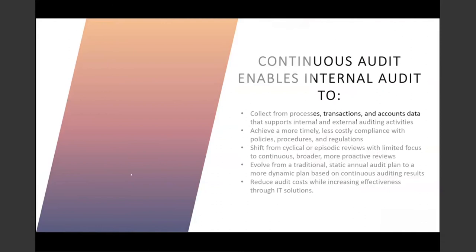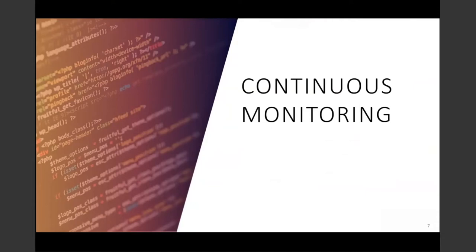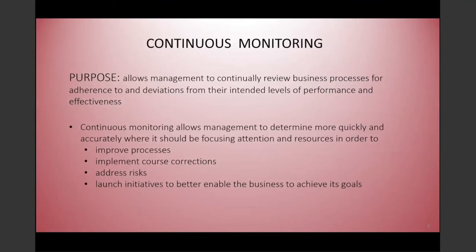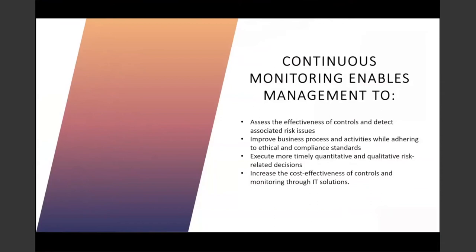Continuous monitoring allows management to continually review business processes for adherence to and deviations from their intended levels of performance and effectiveness. It allows management to determine more quickly and accurately where they should be focusing attention and resources in order to improve processes, implement course corrections, address risks, and launch initiatives to better enable the business to achieve its goals. Continuous monitoring is an automated, ongoing process that enables management to assess the effectiveness of controls and detect associated risk issues, improve business processes while adhering to ethical and compliance standards, execute more timely quantitative and qualitative risk-related decisions, and increase the cost effectiveness of controls and monitoring through IT solutions.